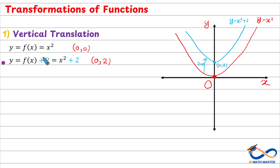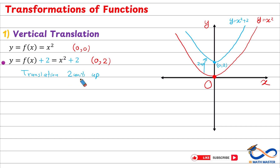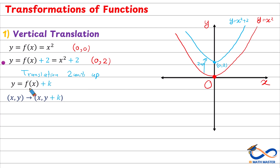So here, since we added 2, it will be a translation — or shifting — 2 units up. And if we added 5 instead of 2, it would be a translation of 5 units up. Generally speaking, if we add a positive number k to the original function f, this will be a translation of k units up, and the point (x, y) will be transformed into (x, y + k). We add the same number k to the y-coordinate.